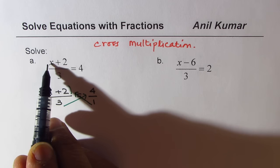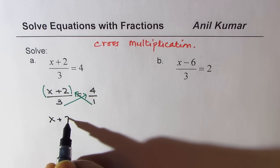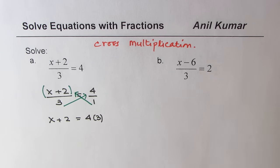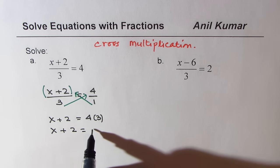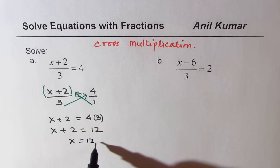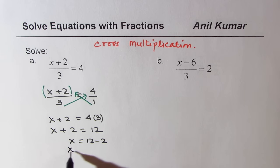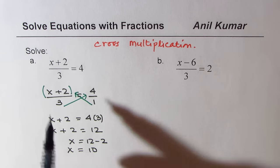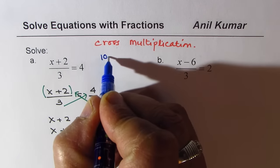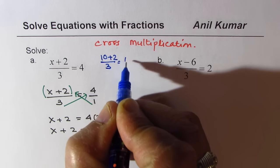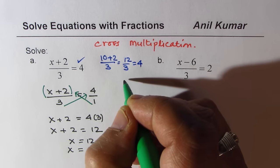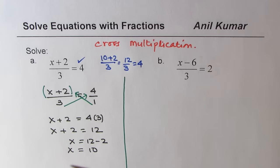So after cross multiplication, we are left with x + 2 on the left side and on the right side we get 4 times 3, which is 12. So we have x + 2 = 12. Now this is without fractions and easy to solve: x = 12 - 2, which is 10. You can check the answer by placing 10: we get (10 + 2) / 3 = 12 / 3 = 4. So that works. It's a good practice to check your answer.